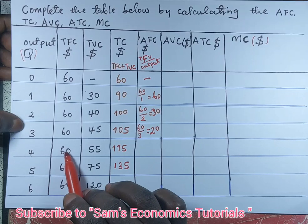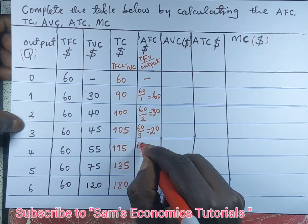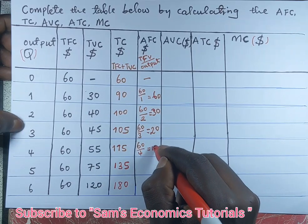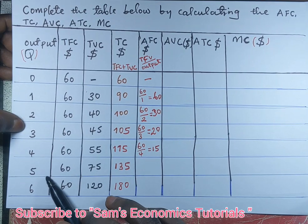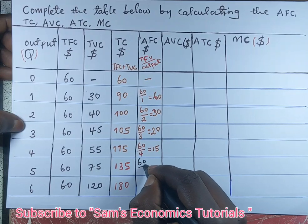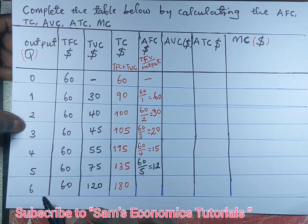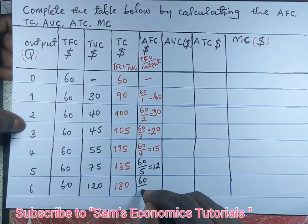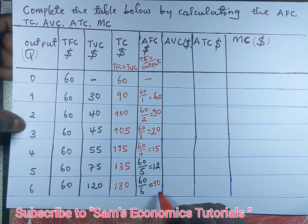When four units of output are produced, we divide 60 by 4, which gives us 15 US dollars per unit output. When five units of output are produced, we divide 60 by 5, which gives us 12 US dollars per unit. Lastly, when six units of output are produced, we divide 60 by 6, giving average fixed cost as 10 dollars per unit.